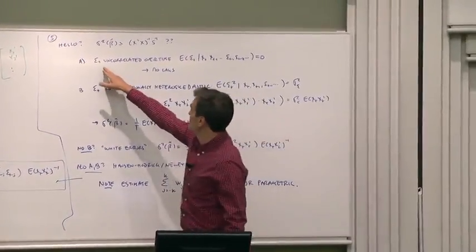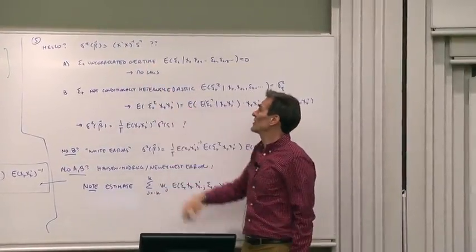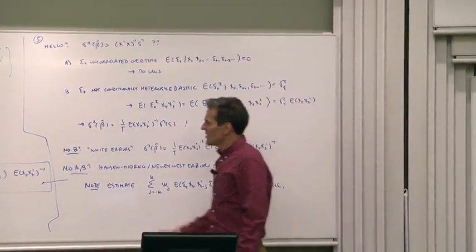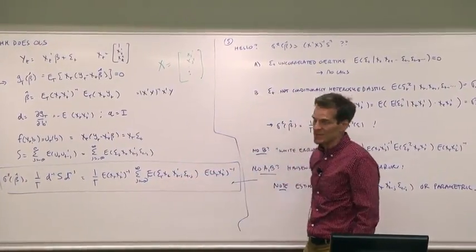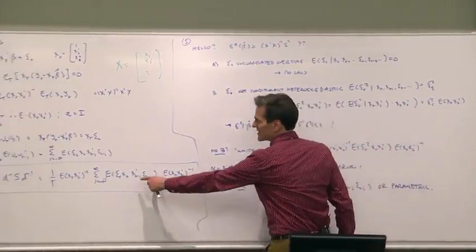Suppose that the errors are uncorrelated over time. That's the usual ordinary least squares assumption. If the errors are uncorrelated over time, then there's no lag terms here. The epsilon t times epsilon t minus j, those all go. So we get rid of the lags.